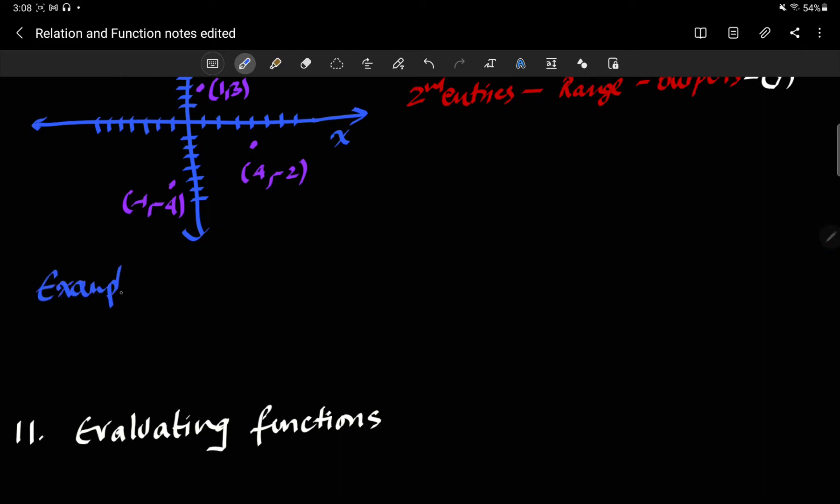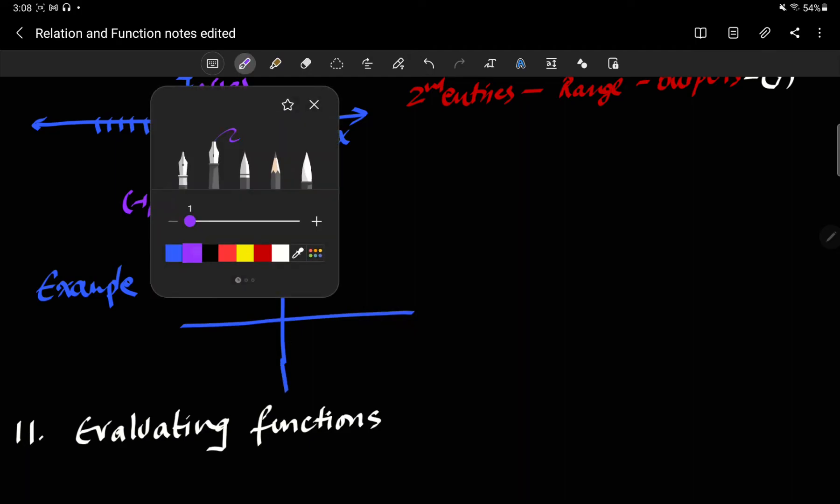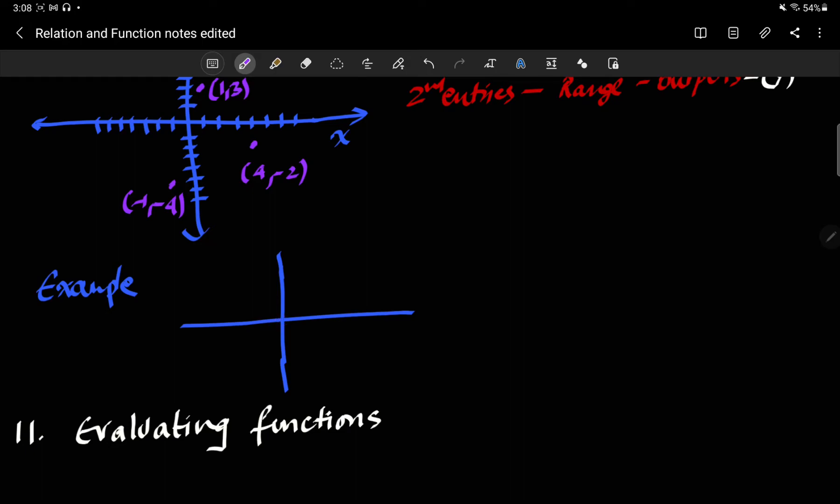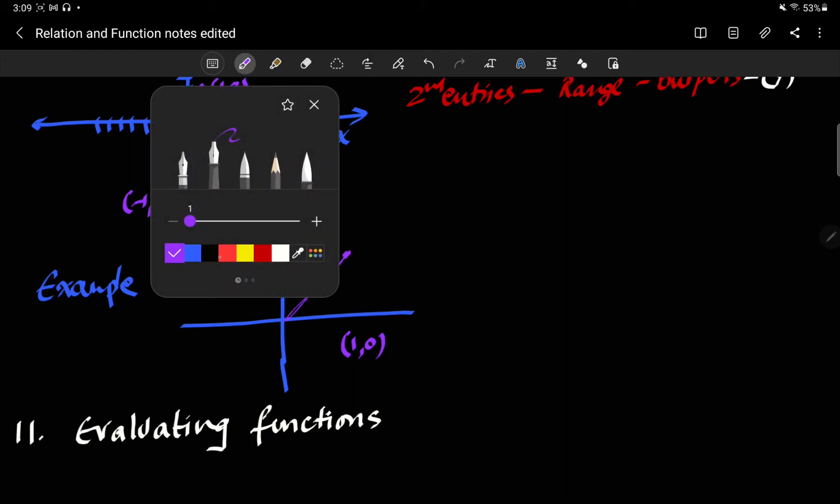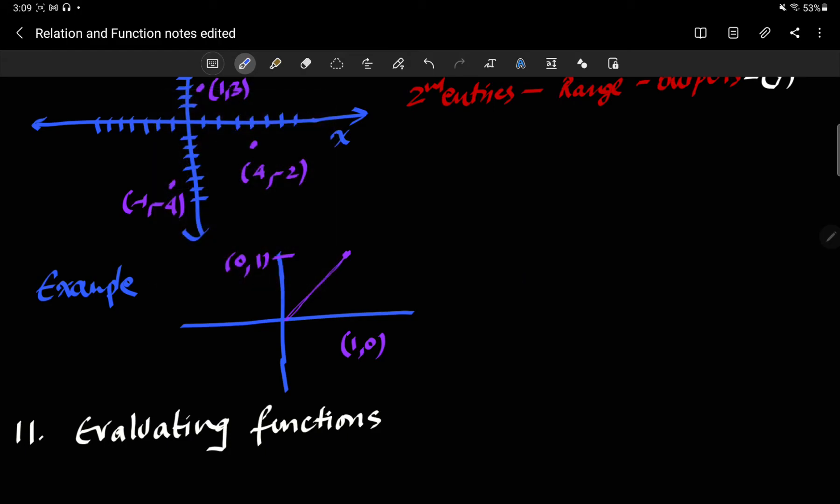For example, now let's say instead of having you draw the graph, I give you a graph. The graph is something like this: it starts at (0,1) and it ends at (1,0). This point here is (1,0) and this point here is (0,1), and this purple line, that's the function.